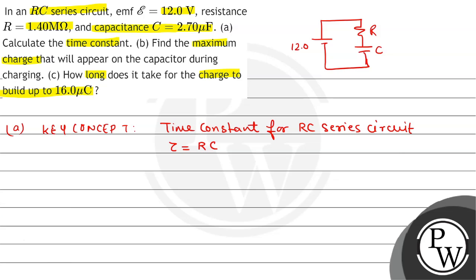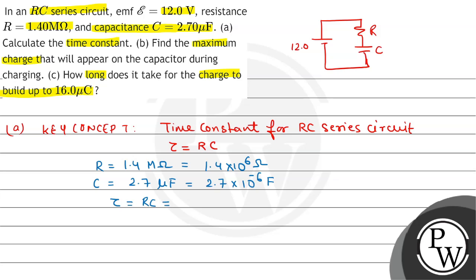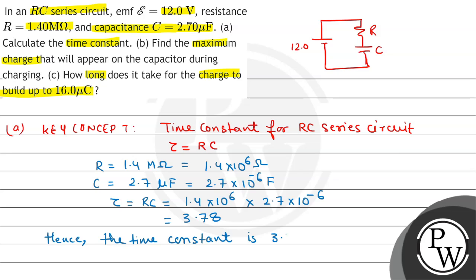R is 1.4 mega ohm, which equals 1.4 × 10⁶ ohms. C is 2.7 micro farad, which equals 2.7 × 10⁻⁶ farad. So our time constant tau equals RC, that is 1.4 × 10⁶ multiplied by 2.7 × 10⁻⁶. The value is equal to 3.78. Hence, the time constant is 3.78 seconds.